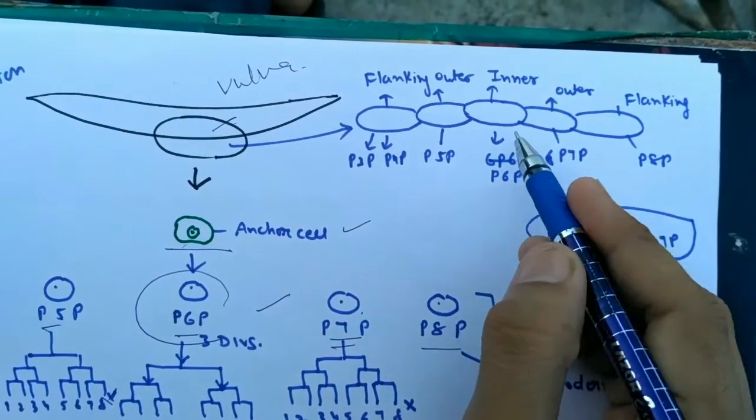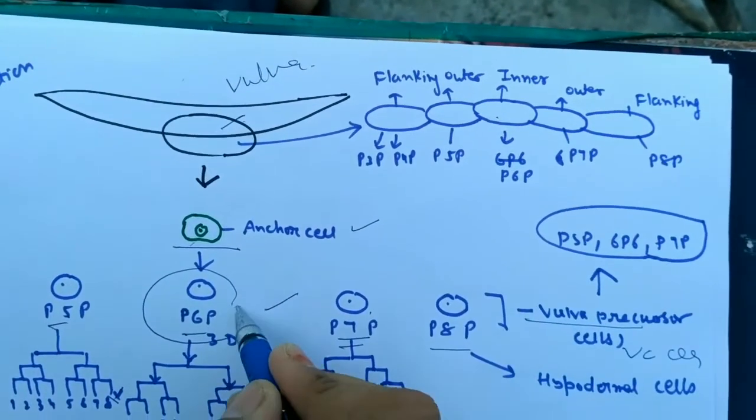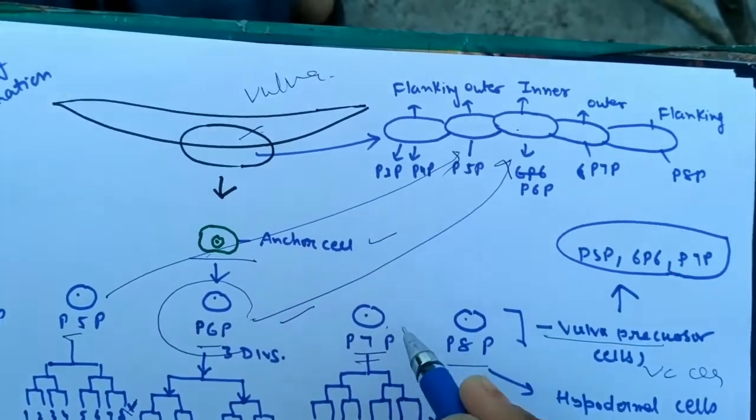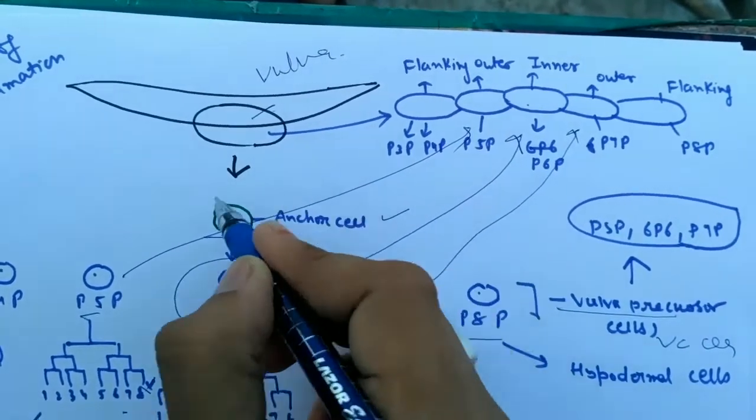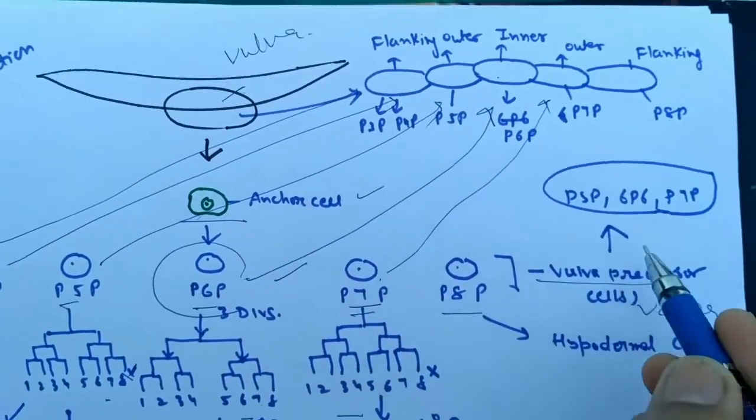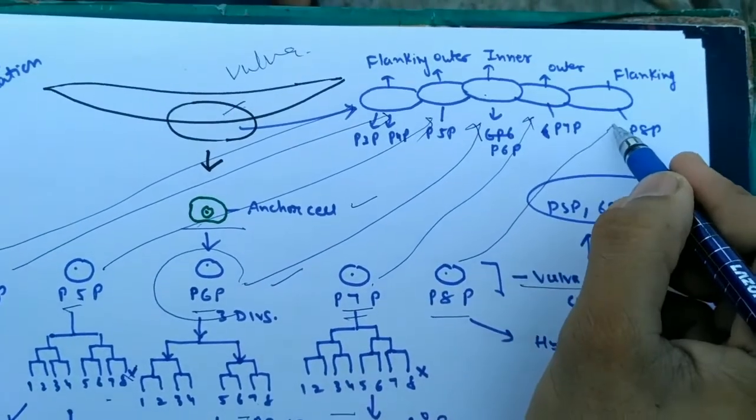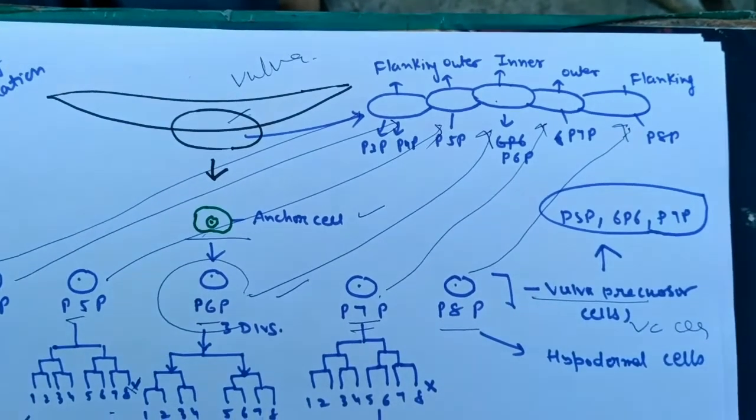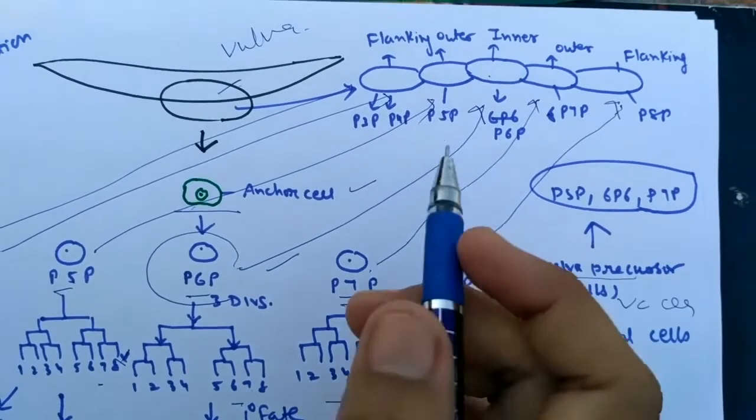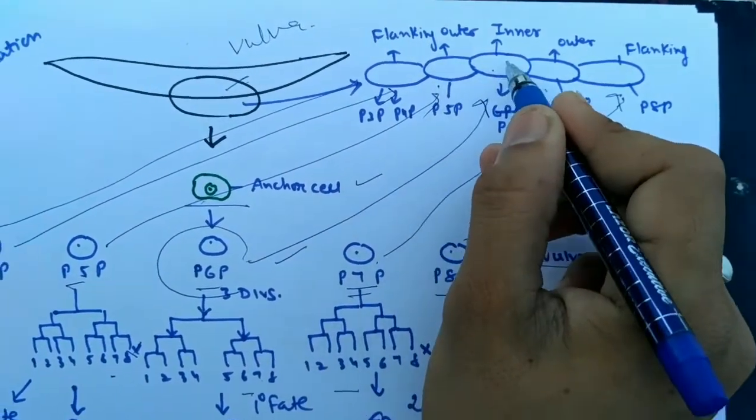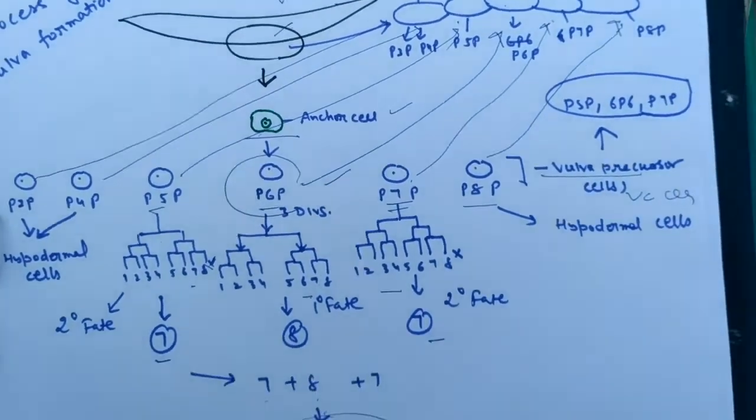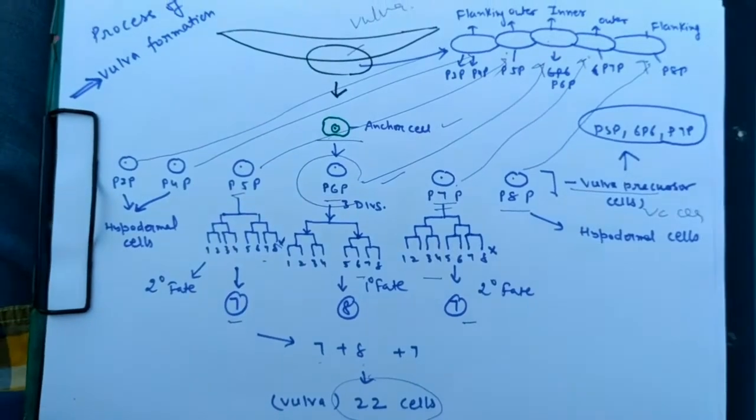See this area carefully. The inner area is derived from P6P, outer area by P5P and P7P, and the flanking area by P3P, P4P, and P8P. The flanking area is regarded as the hypodermal area, outer area is called outer cells of the vulva, and inner is the core area of the vulva. I hope it is very clear to you from this diagram.